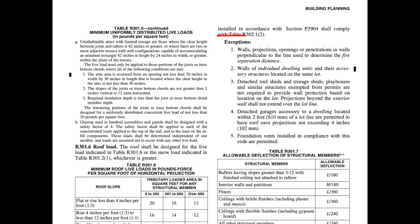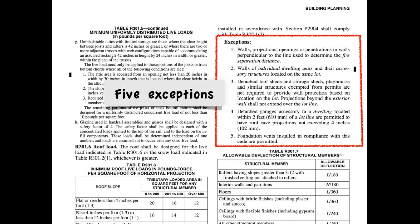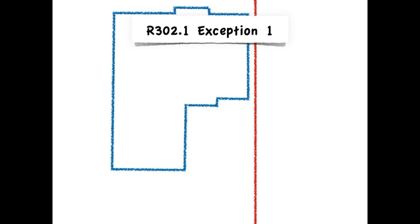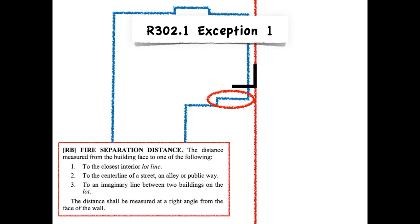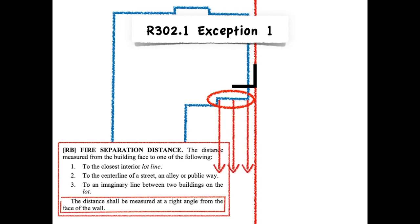There are five exceptions that detail conditions that would not apply to that table exactly as it's presented. The first one is honestly a little bit useless — it just says that the wall element perpendicular to the fire separation distance line does not have to apply to the requirements. But if you remember from the previous session, in the definition, you measure at a right angle from the wall, so we already sort of knew this.